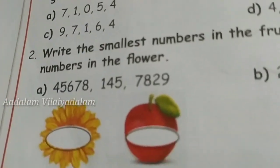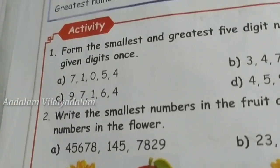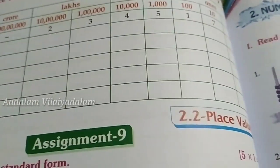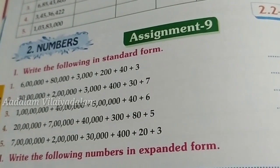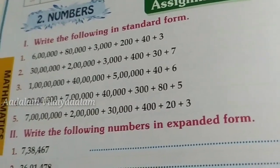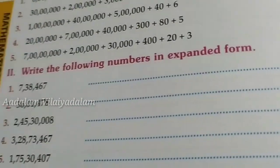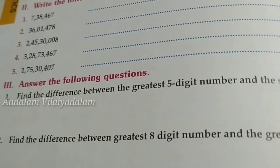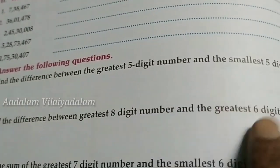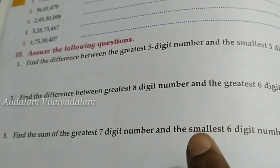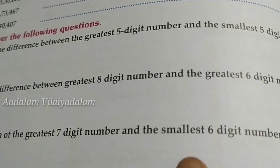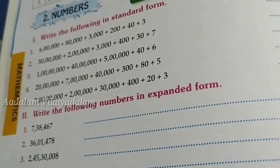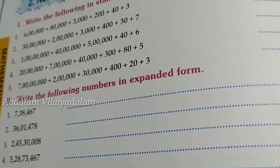There are more examples for smallest and biggest numbers, place value charts, and expansion forms. You are given the expanded form and must write the whole number, or given the standard form and must write the expanded form. You also need to find the difference between the greatest and smallest five-digit numbers, and do addition. Please complete and submit the homework for your marks. See you in the next class, thank you.